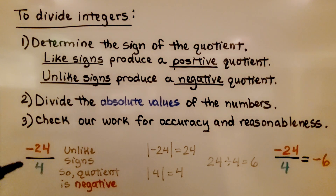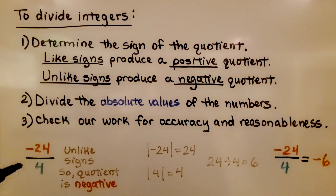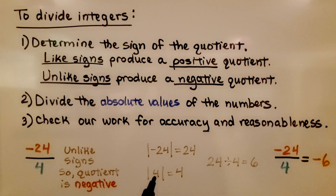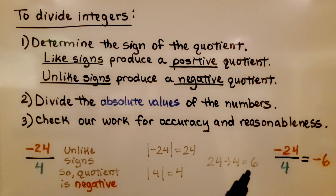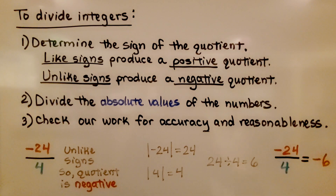Here we have negative twenty-four divided by positive four. Fractions are division problems. They have unlike signs — we have a negative and a positive — so we know the quotient is negative. The absolute value of negative twenty-four is twenty-four, and the absolute value of positive four is four. Twenty-four divided by four is six, and because they have unlike signs, the quotient is negative six.